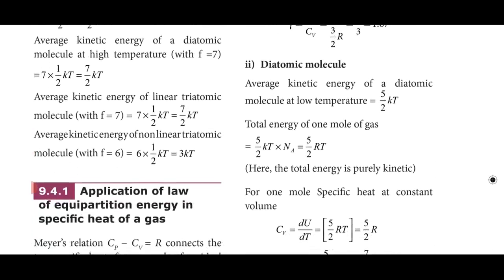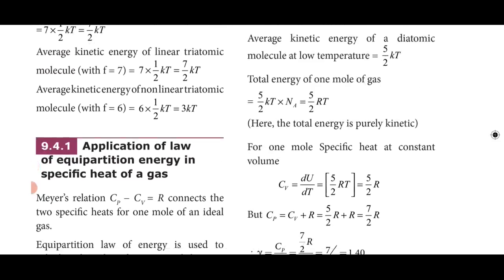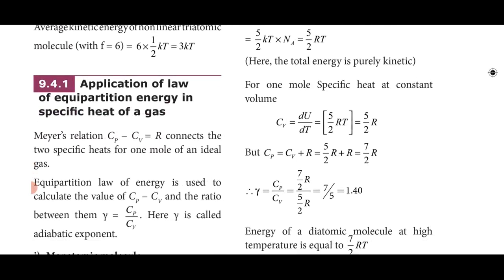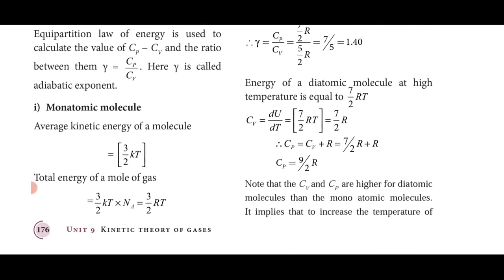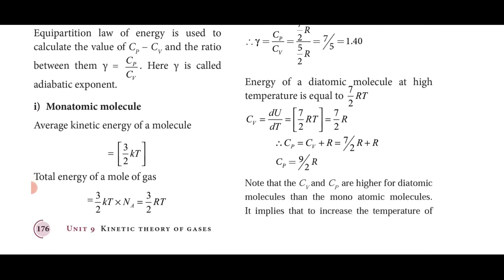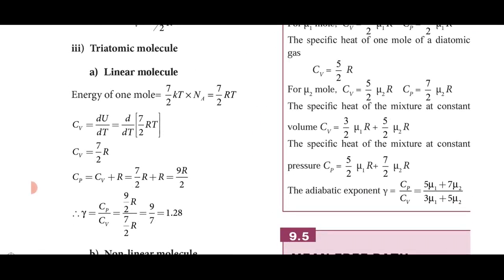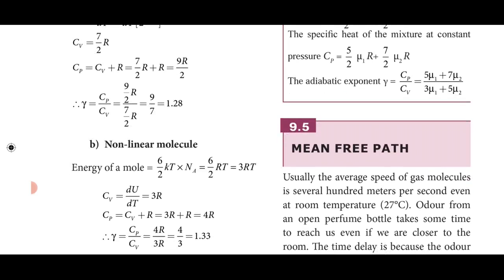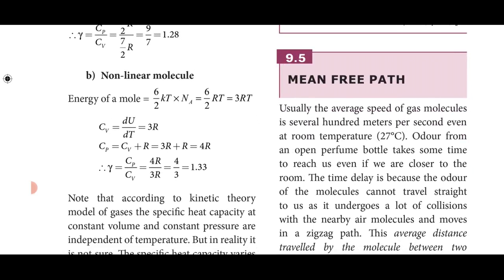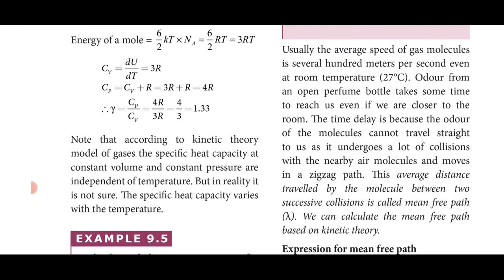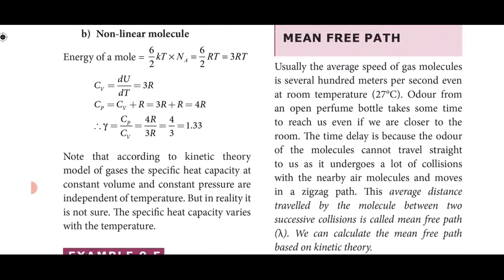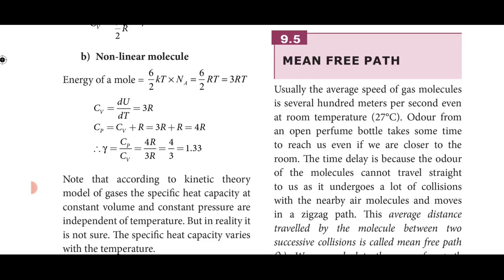The same process is repeated for diatomic molecules. Substituting Cv = 5/2 R, Cp = 7/2 R, giving μ = 7/5. At higher temperature Cv = 7/2 R, Cp = 9/2 R. For non-linear triatomic substituting 3R gives μ ≈ 1.33. Note: kinetic theory predicts specific heats independent of temperature, but in reality specific heat capacity varies with temperature.